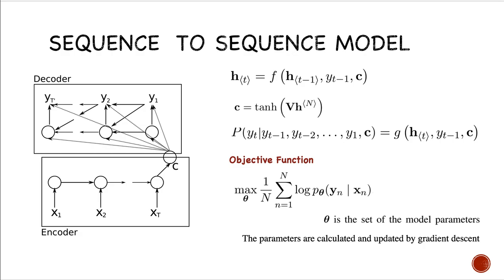This is the structure of the sequence-to-sequence model. Here, H stands for the hidden layer units. And C is kind of the context vector. And it is also kind of a thought vector.